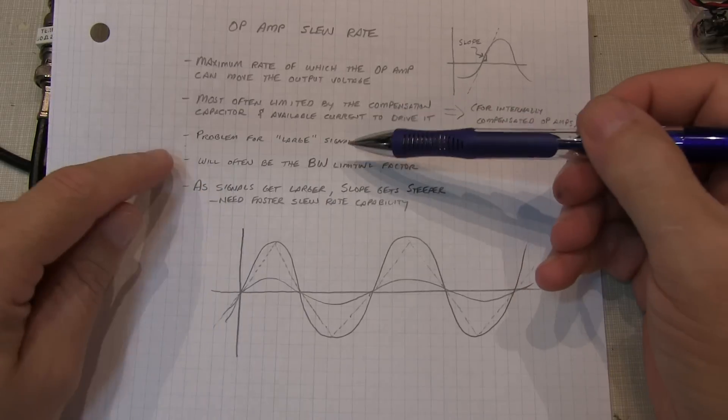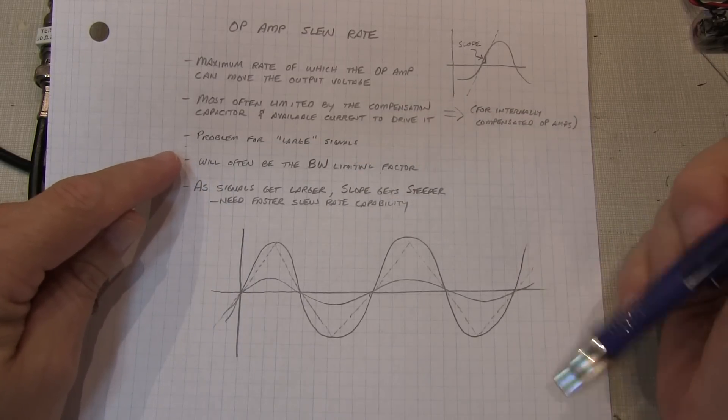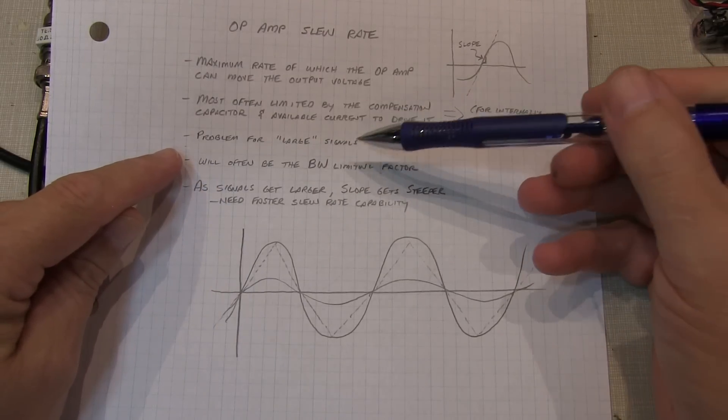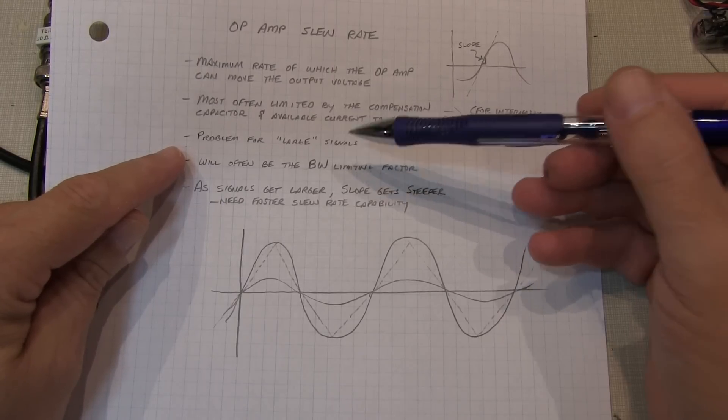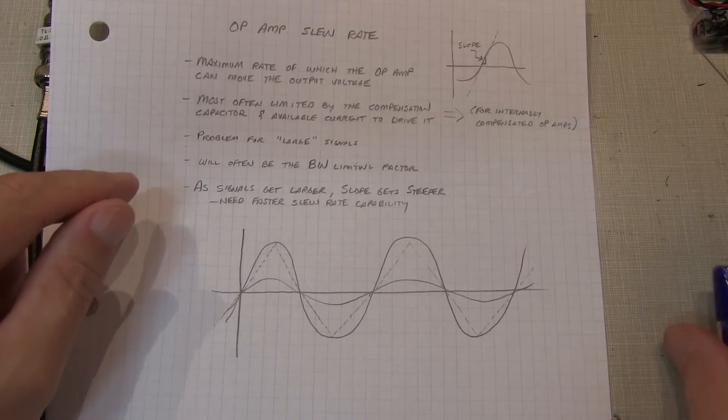So this is a problem typically for large signals, not so much of a problem for small signals. Because what you'll find is that large signals, even at the same frequency, have a higher slew rate. Let me show you what I mean by that.